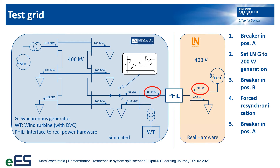Then we will increase the power in-feed from the real generator, which will decrease the simulated load. After we split the system with the breaker in position B, we will force our wind turbine to synchronize our test bench with the simulated generator and we can connect both grids again. So, let's activate the simulation and start the amplifier.